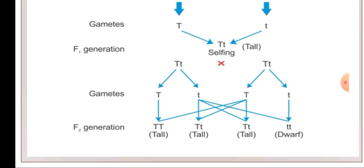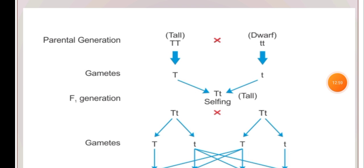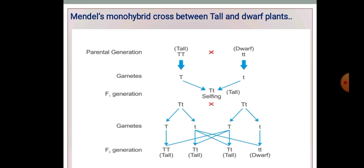This indicates that the trait which was not expressed in the F1 generation is now expressed in the F2 generation. F1 plants were found to have only one type of trait — that is tall. F2 generation had two types of plants: a large number with the trait found in F1 generation, and a smaller number with the trait not expressed in F1. In all cases the ratio was 3 to 1.